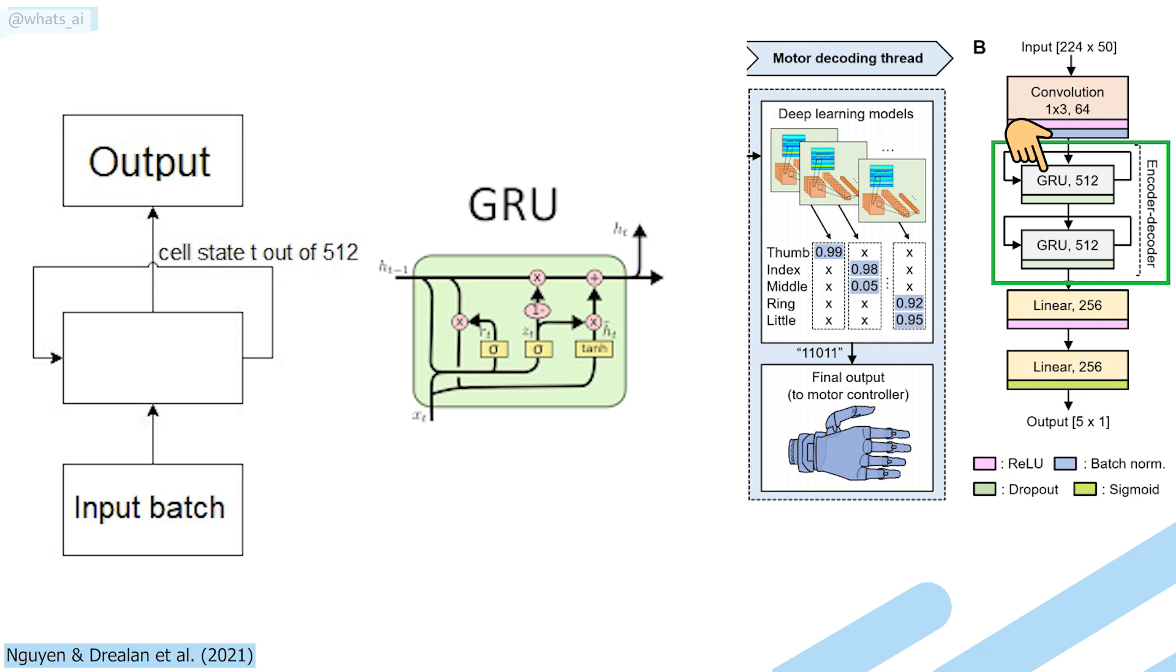GRUs will allow the model to understand what the hand was doing in the past second, what is first encoded, and what it needs to do next, what is decoded.